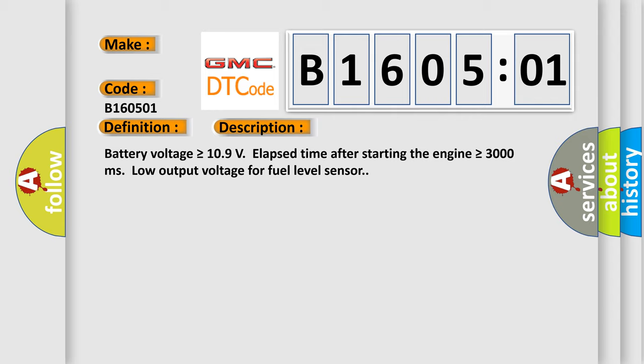Battery voltage is greater than or equal to 10.9 volts. Elapsed time after starting the engine is greater than or equal to 3000 milliseconds. Low output voltage for fuel level sensor.